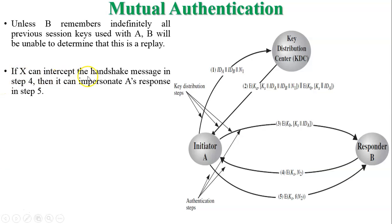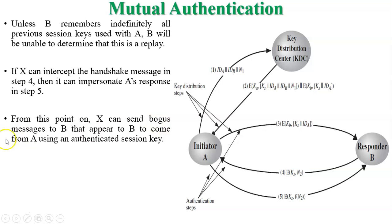Furthermore, if X can intercept the handshake message in step four, it can impersonate A's response in step five. Whenever B gets the message from the replayed step three, B will reply with a step-four message to A. But X can intercept that message, find the nonce using the session key, and send the fifth message to B. User B then thinks the message was sent by user A. From this point on, X can send bogus messages to B that appear to come from A using the authenticated session key — but user B has no idea they are communicating with X instead of A.